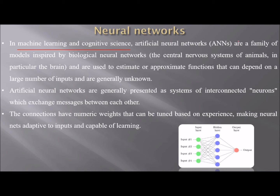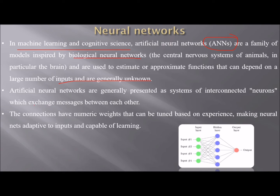In machine learning and cognitive science, an artificial neural network is a family of models inspired by biological neural networks — the central nervous system of animals, in particular the brain. Neural networks are used to estimate or approximate functions that can depend on a large number of inputs and are generally unknown. They are generally presented as a system of interconnected neurons which exchange messages between each other.